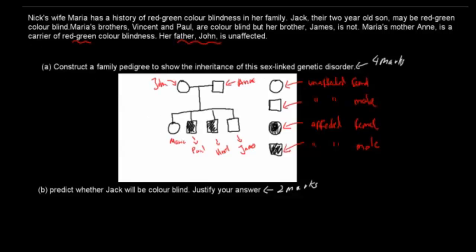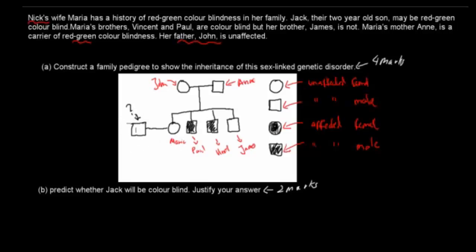Maria had a child with Nick. Nick was the original person mentioned — Nick's wife Maria. So these two are married; we'll do the marriage line again. It doesn't actually say if Nick is affected or not, so we don't really know — we'll put a question mark. They have one boy and his name is Jack. Jack is a boy, and the question is asking whether Jack is colorblind or not colorblind.